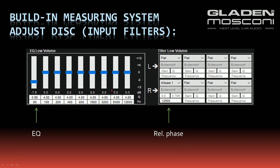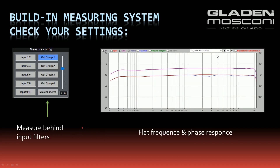After this, you can adjust your input filters and DSP section to correct the frequency response with the input equalizer, and adjust the relative phase response with the allpass filter in the filter section. To check your settings, you have to measure behind the input filters — which means measuring on the mixer output, in this case output group one.